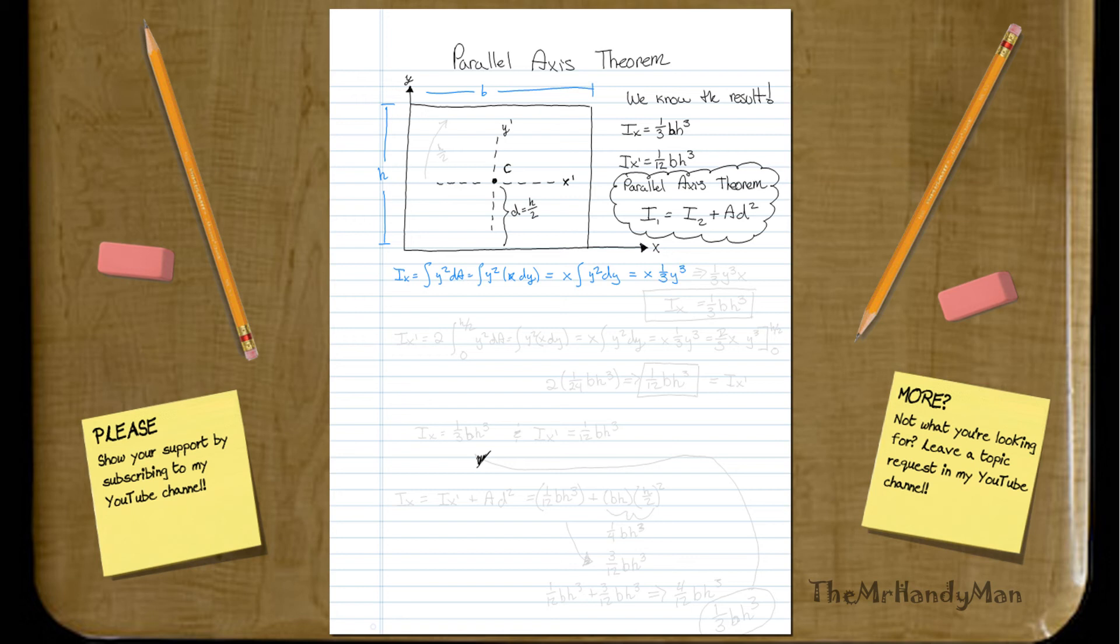Which, if we just clean that up a little bit, we'll have one-third y cubed x, or one-third bh cubed. And, okay, so this is the inertia about the x-axis. That's exactly what we had tabulated.